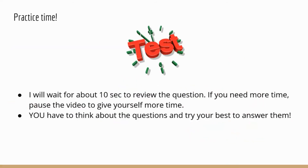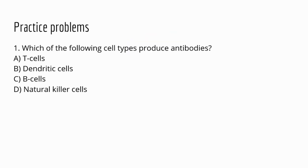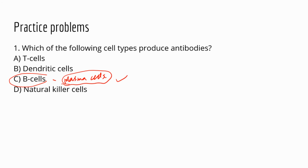Now let's do some practice questions, mostly from the TEAS study materials. Question one: which of the following cell types produce antibodies? The correct answer is B cells — and if changed to plasma cells, that's also correct as it's more specific. T cells are the stars of cell mediated immunity. There are three types: helper T cells, which activate B cells and cytotoxic T cells, and are the specific target of HIV.